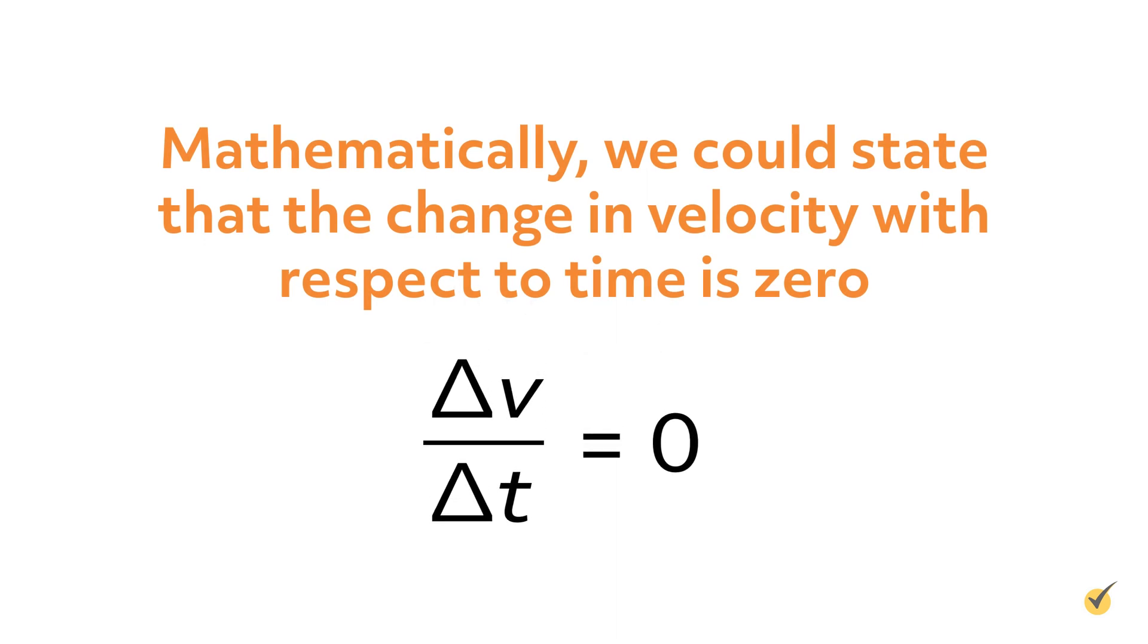Mathematically, we could state that the change in velocity with respect to time is zero. What we've just described is the constant motion of an object that is in a frame of reference with zero velocity.